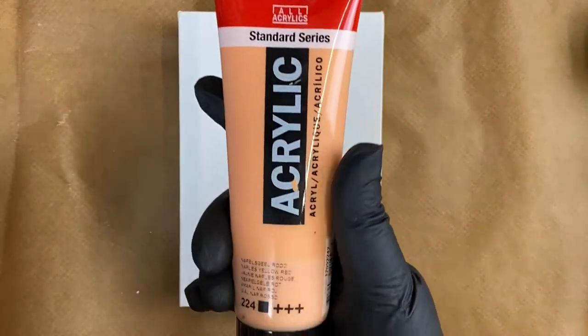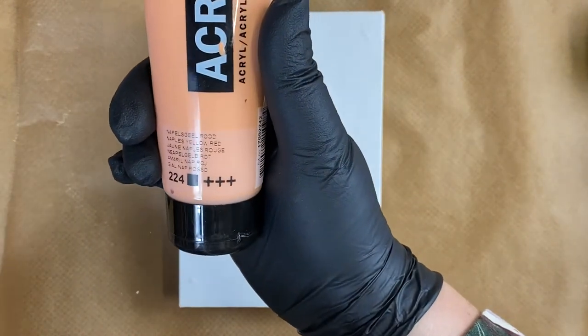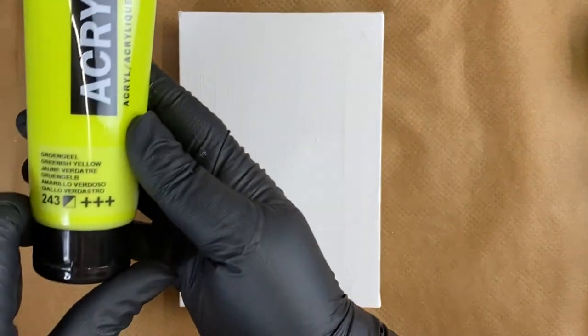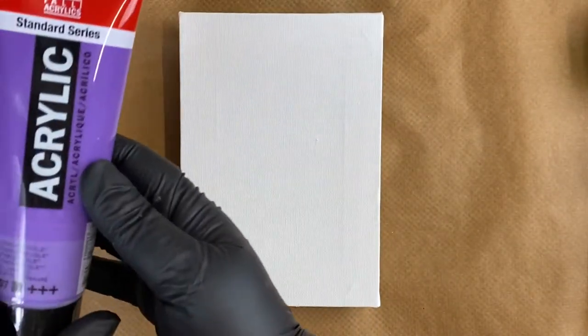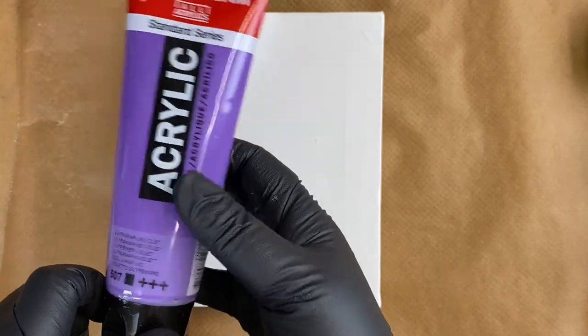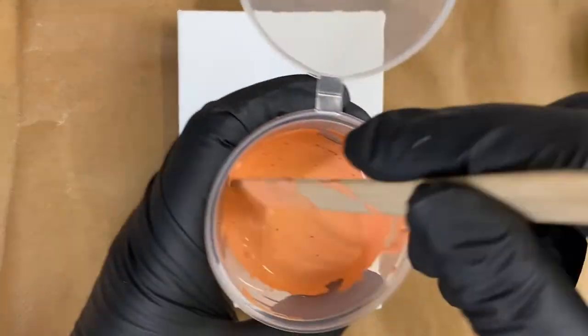Now my colors I'm using are all Amsterdam: Naples yellow red, greenish yellow, and ultramarine violet, which I need to get some more of. I've actually ordered some today because I'm getting very low on that one.